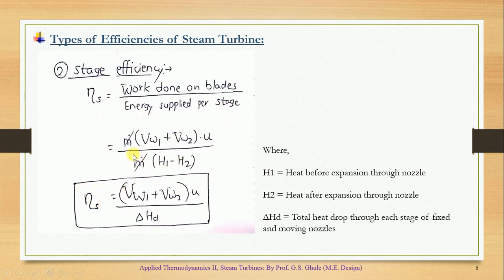Therefore, the stage efficiency is given by, after cancelling this m dot, we are getting it as Vw1 plus Vw2 into u upon delta Hd. So I hope you have understood the derivation for stage efficiency and the formula for it. Thank you so much.